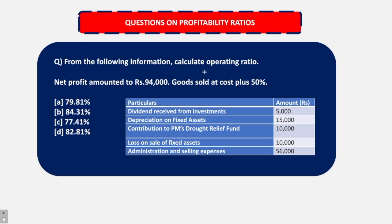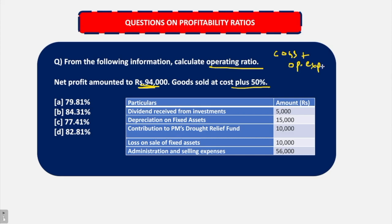From the following information, calculate operating ratio. Net profit has been given as 94,000. Goods are sold at cost plus 50%. We have to find out other things. So here we have to find out operating ratio, which is COGS plus operating expenses minus operating income. Let's have a look at the items. Dividend received from investments — these are not operating expenses. Depreciation on fixed assets — these are operating expenses.